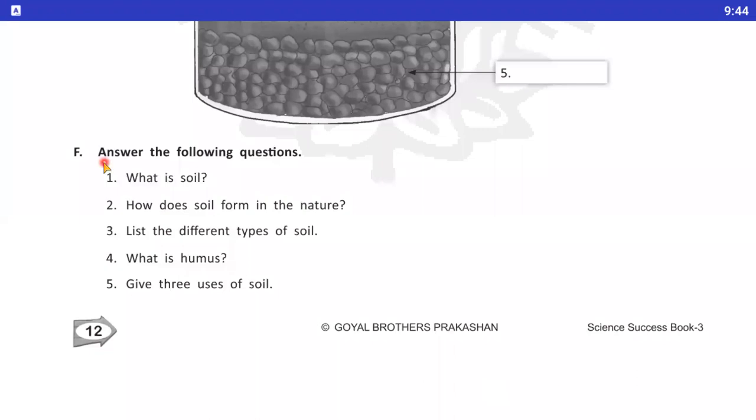Question number F. Answer the following questions. Question number 1. What is soil? Soil kya hai? The top layer of the earth in which plants grow is called soil. Earth ki top layer jisman ki plants grow kertai hai, usse hum soil kehte hai. Number 2. How does soil form in the nature? Soil kaise bani? Soil is formed by the breaking of big rocks. Badi-badi rocks ki break hoonay se soil bani.